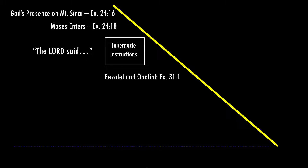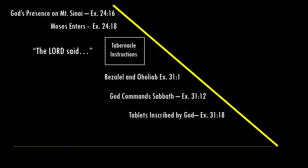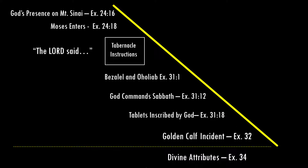The spirit of God will rest on them and they will have wisdom, understanding, and knowledge — a trifecta that's all throughout the Bible. Those two are the artisans. Then God gives commandments for the Sabbath. Then the tablets — the 10 commandments are inscribed by the finger of God. Moses comes down off the mountain, finds the golden calf. What happens to the tablets? Broken. This would be the holiest thing ever — tablets inscribed by God — and they end up shattered. We're flowing down to the golden calf incident.